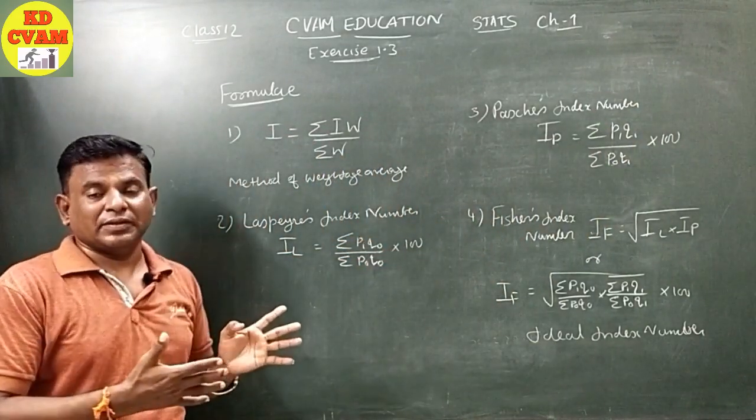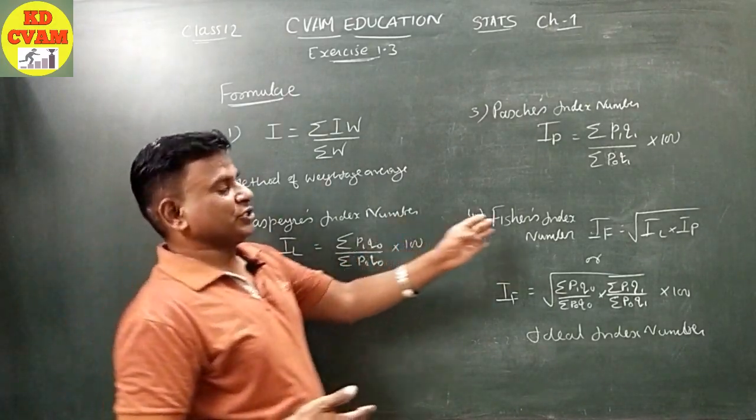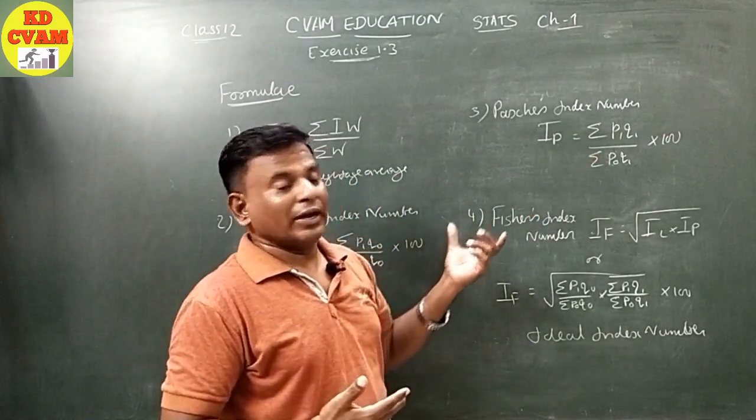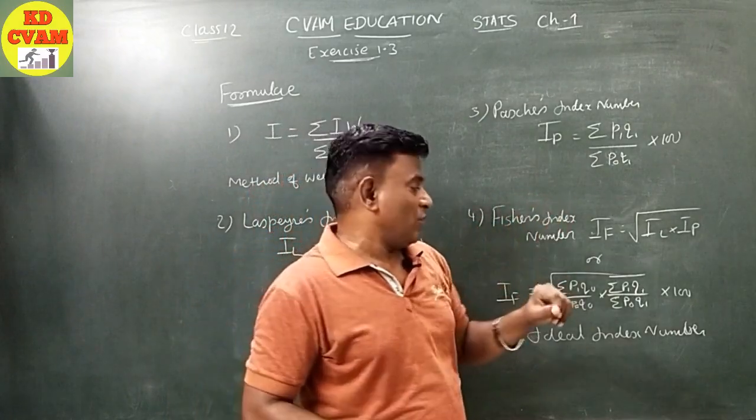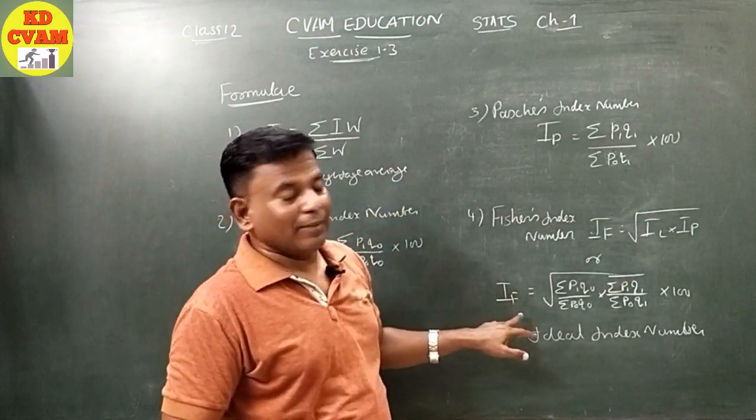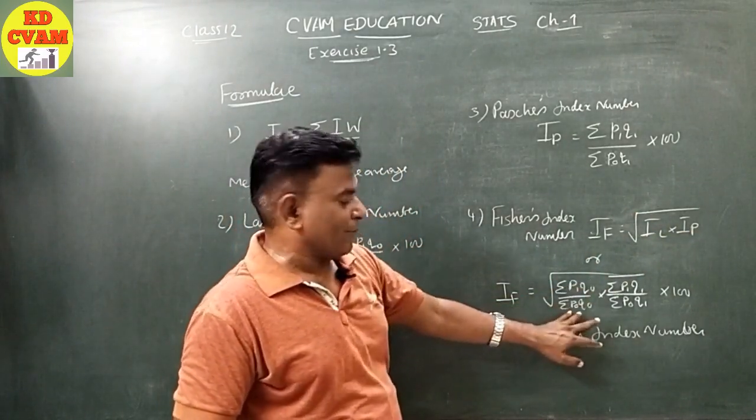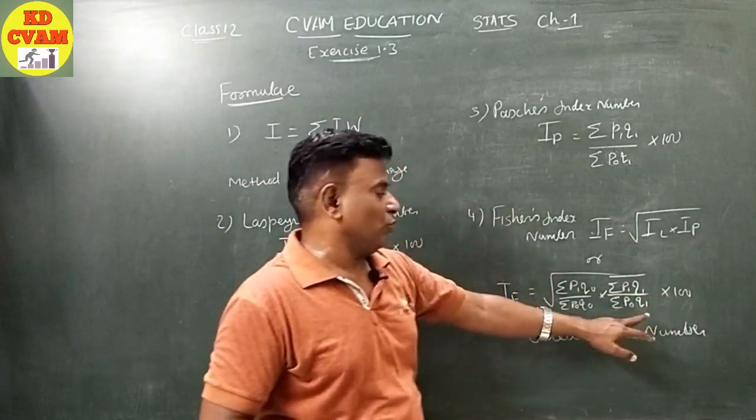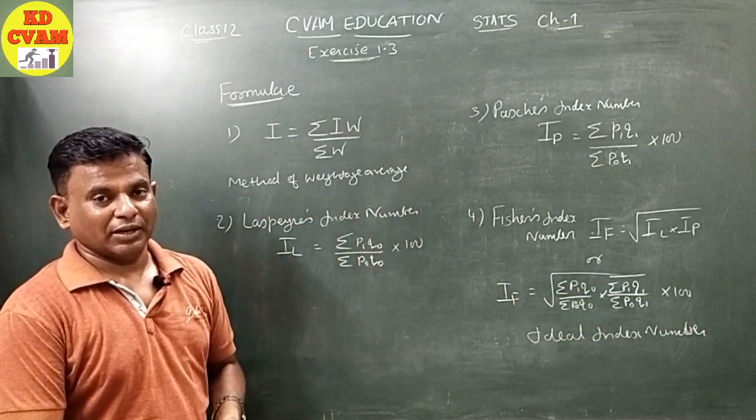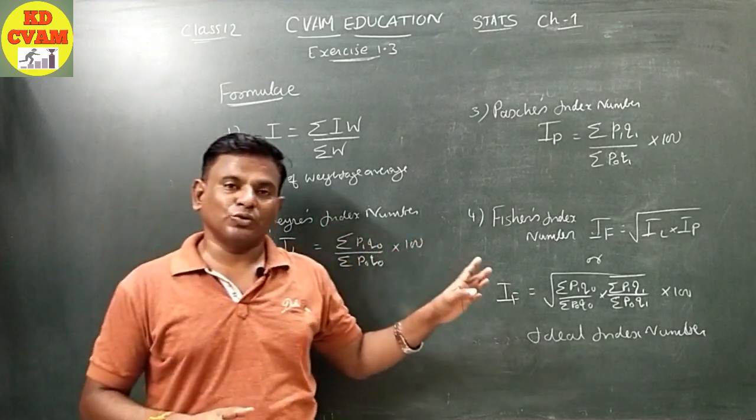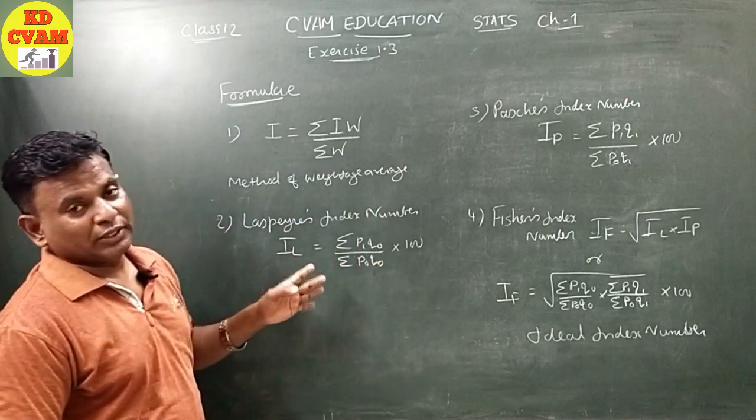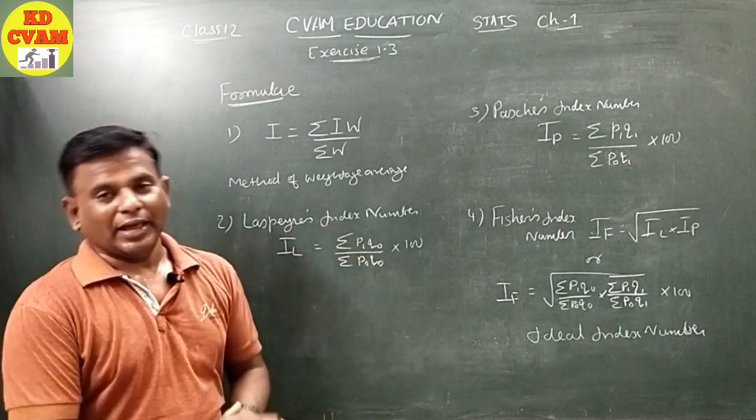Then Fischer's index number. Fischer thought, why not combine both? He took the geometric mean of Laspeyres and Paasche's. IF equals square root of IL into IP, which is square root of (sigma P1Q0 upon sigma P0Q0) into (sigma P1Q1 upon sigma P0Q1) into 100. These four formulas are used in Exercise 1.3. Go through them carefully, and then we'll start the exercise.